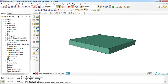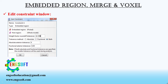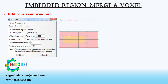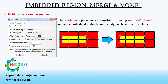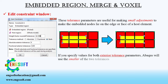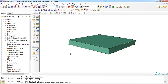In the edit constraint window, specify values for the tolerance parameters. These tolerance parameters are useful for making small adjustments to make the embedded nodes lie on the edge or face of a host element. If you specify values for both exterior tolerance parameters, Abaqus will use the smaller of the two tolerances. Click the OK button — now the embedded region constraint is defined, as simple as it looks.